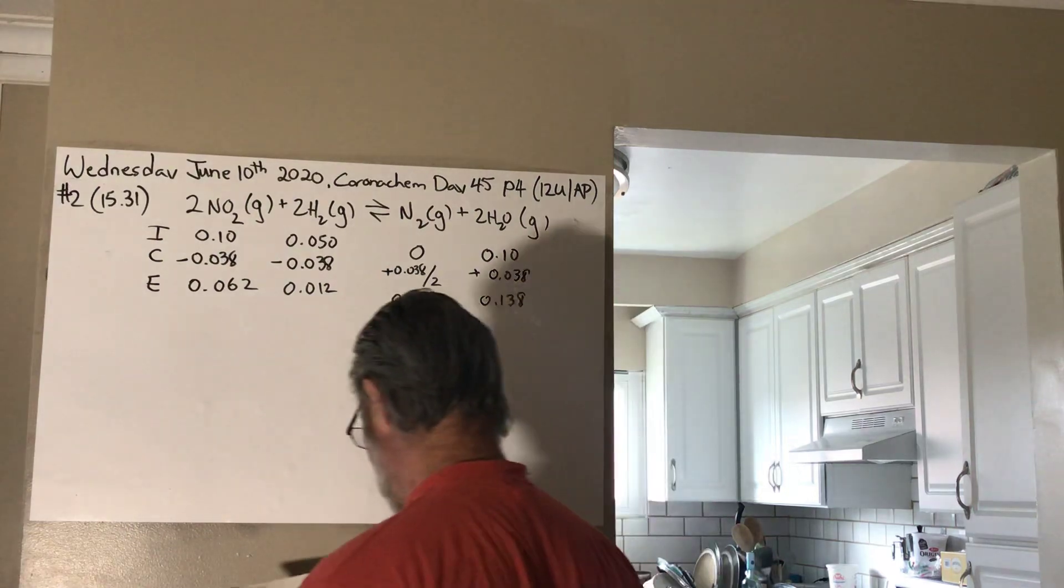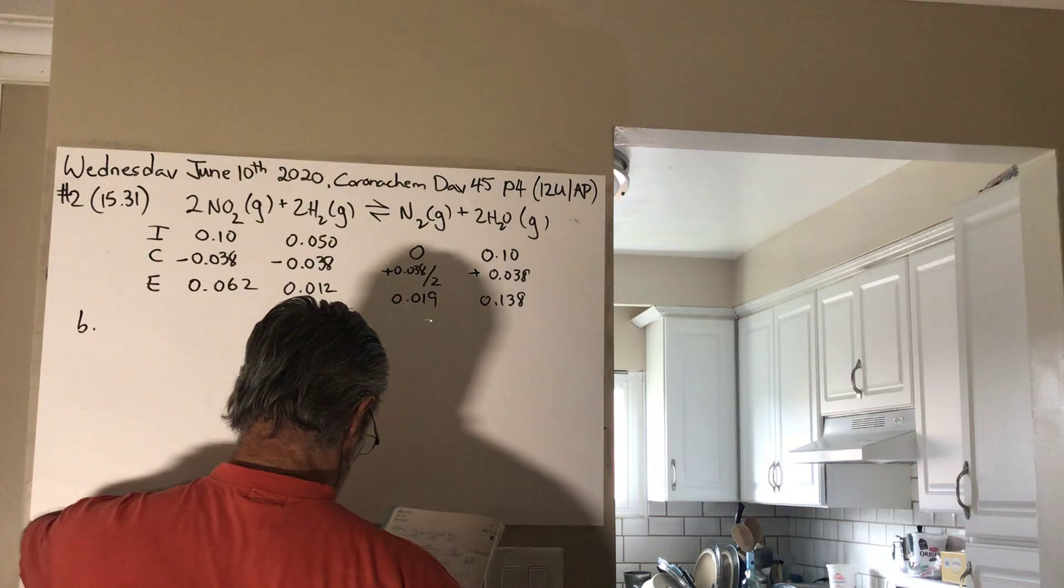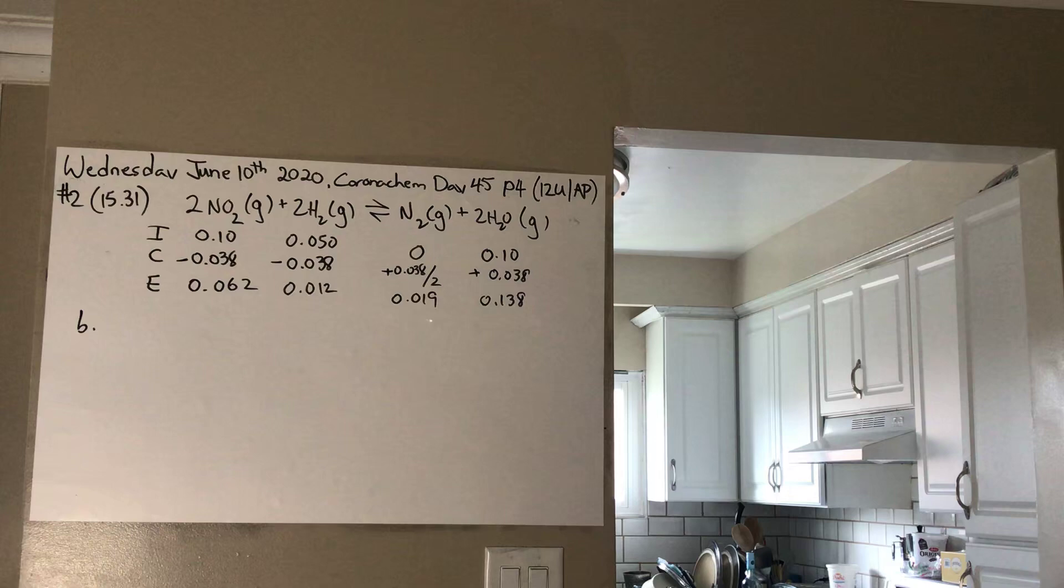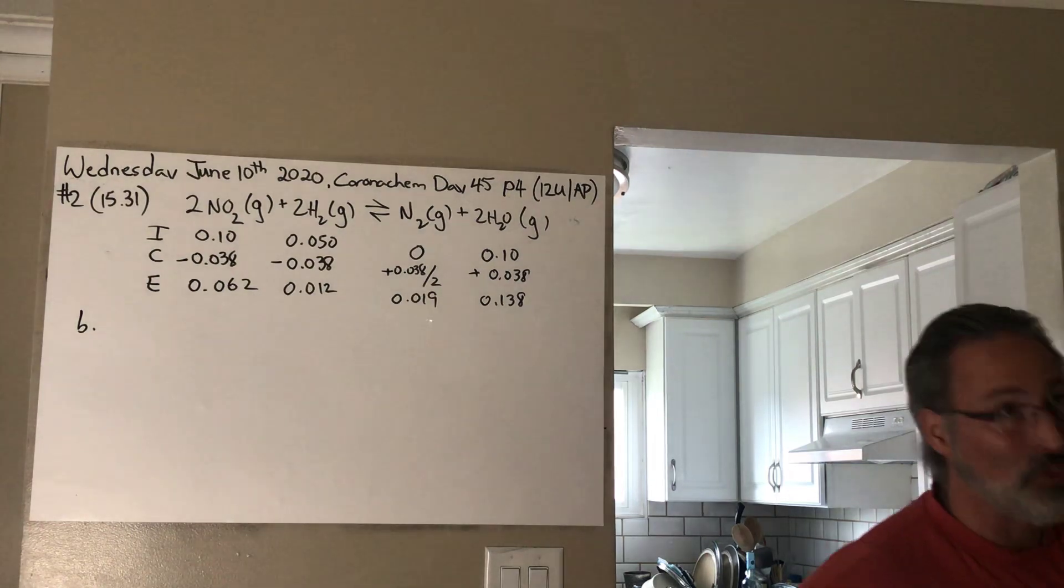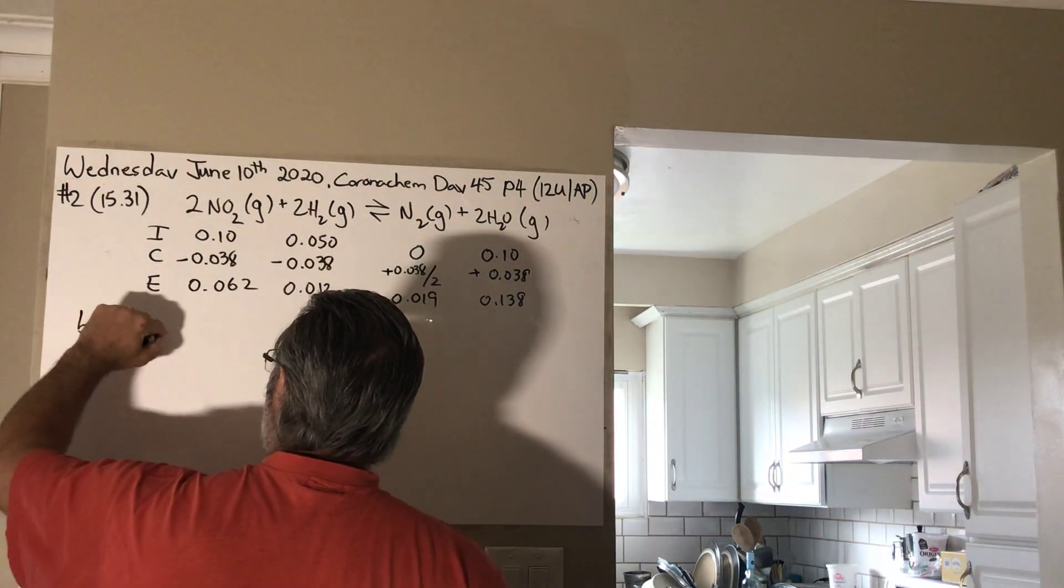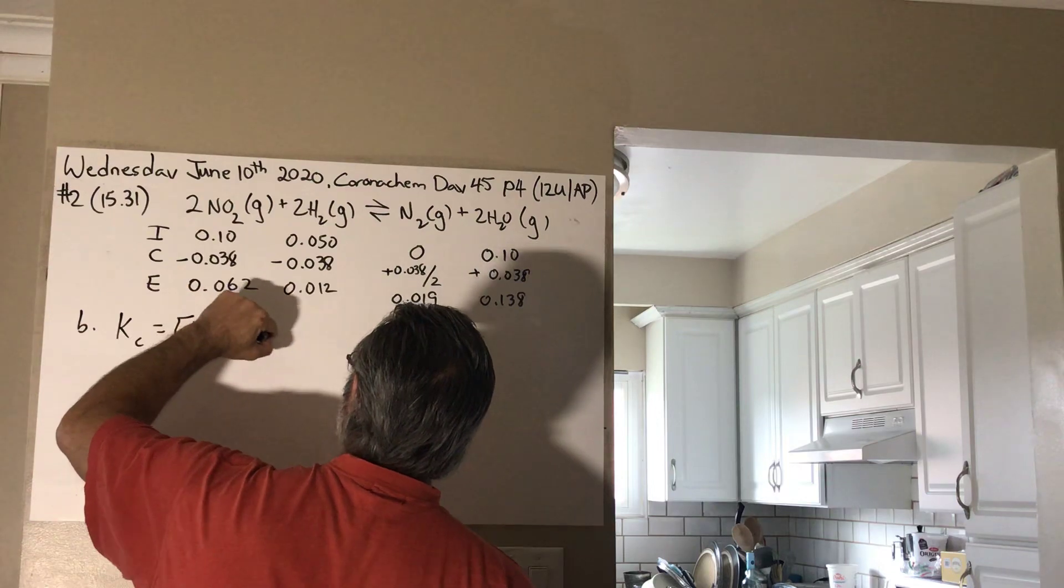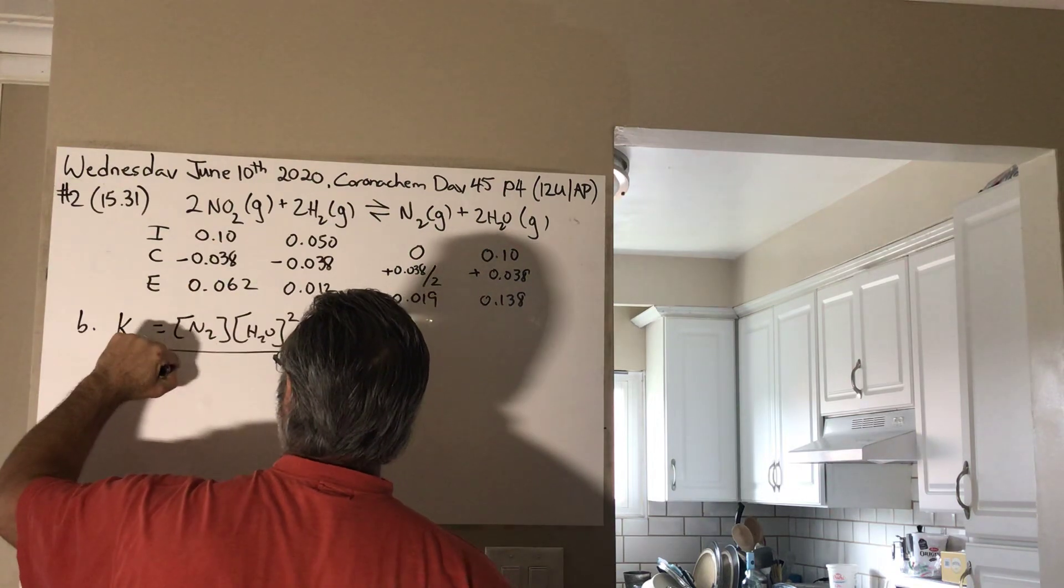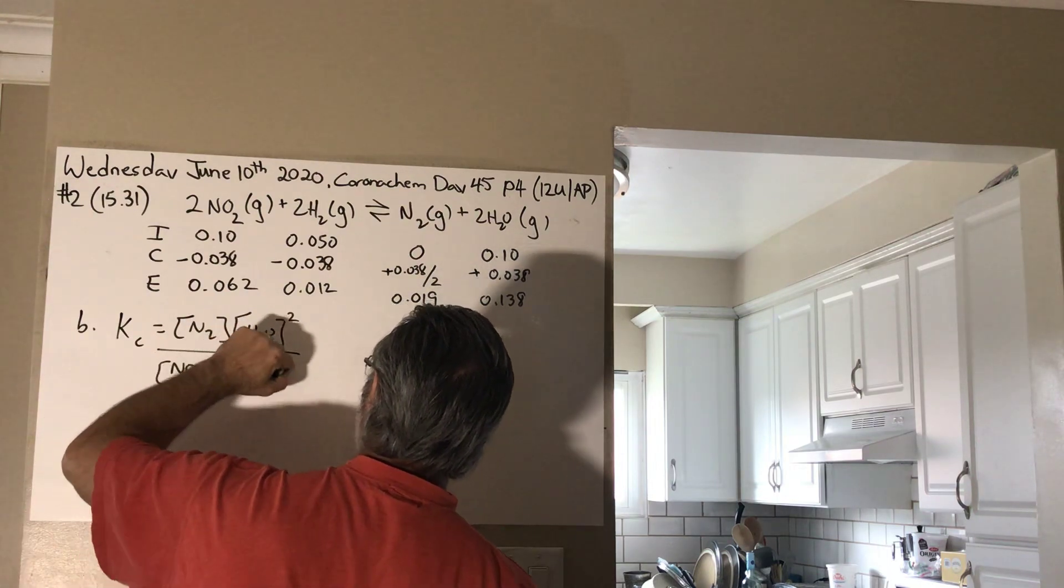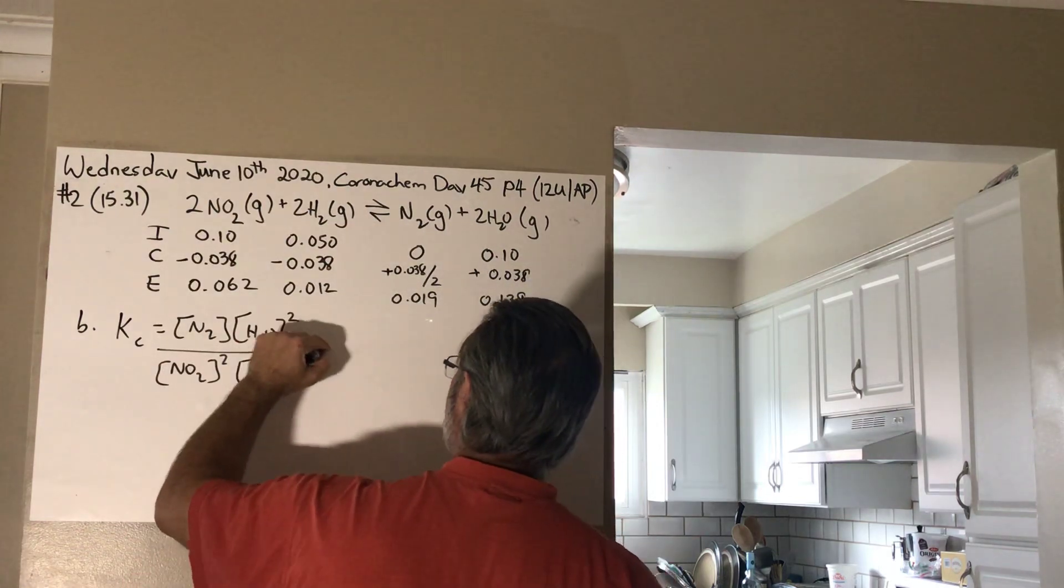So, to find the value of Kc, let's put in all those concentrations. Are they concentrations? Moles. Yeah, they're moles, and it's a one liter container. So, it's moles per liter. Yeah, they're all concentrated. So, Kc is equal to the N2 concentration times the H2O concentration to the power of 2, over NO2 concentration to the power of 2, times H2 concentration to the power of 2. You get all these powers from looking at the appropriate coefficients.